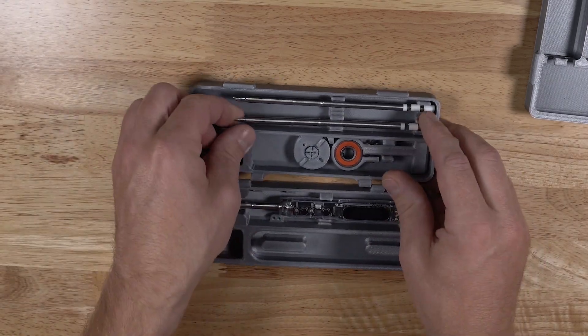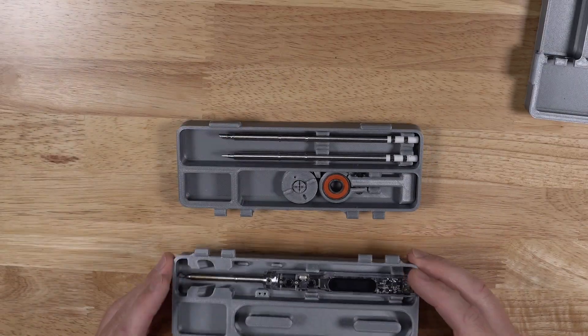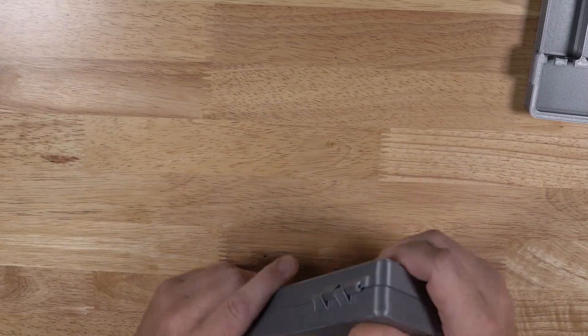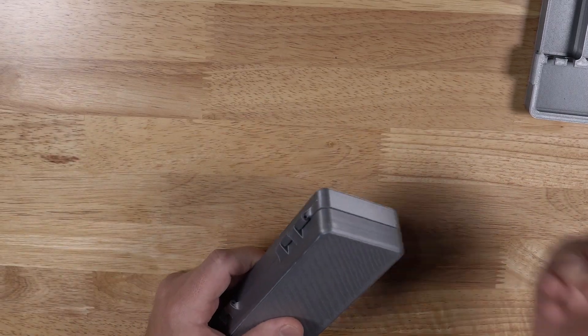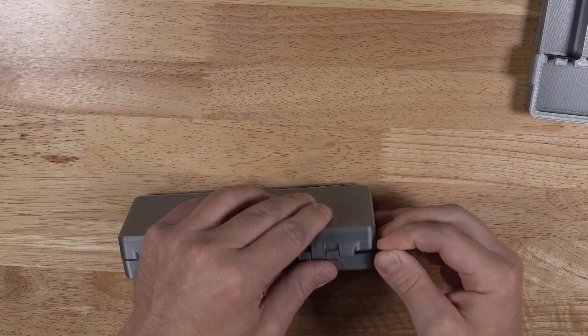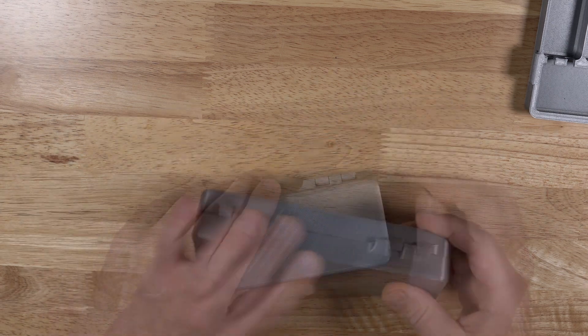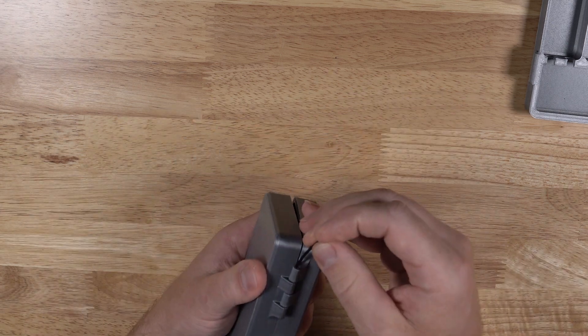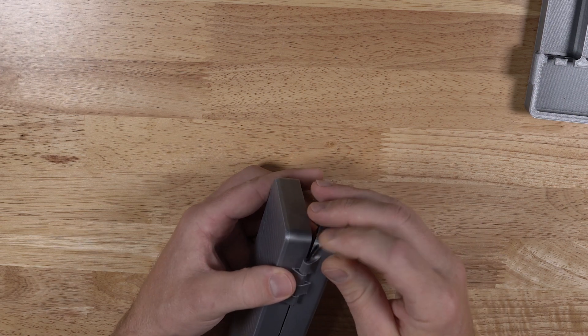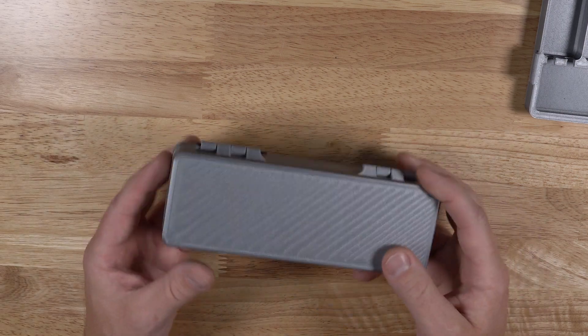It will definitely be on Thingiverse. Obviously link in description. But this holds the iron, two tips. Cool thing about this design I really like is the hinge mechanism. The hinge is actually just a piece of 3D printed filament. So you just run a piece of filament through the holes and then snip the length and melt it down and now you have the hinge for the case.